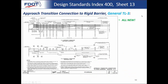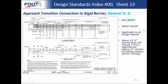Moving on to Sheet 13, we have our approach transition connections to rigid barrier — the general TL3 version. We now also have a TL2 version shown in a moment. This is an all-new, MASH-tested approach transition applying to all design speeds as TL3. It's about 12 feet 6 inches shorter than the old Detail J. This is essentially what replaces Detail J — the overall system is about 25 feet shorter if you consider the large barrier overlap has been removed in favor of a simpler connection.